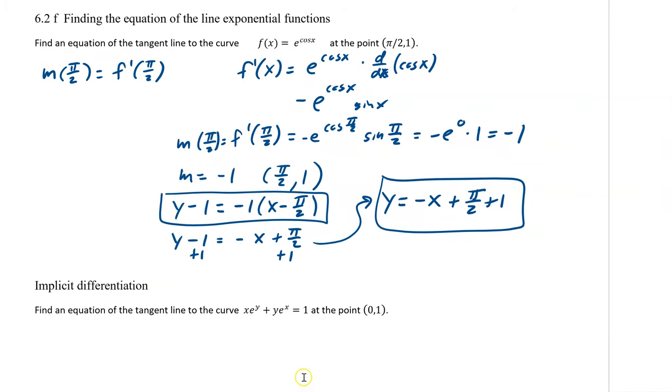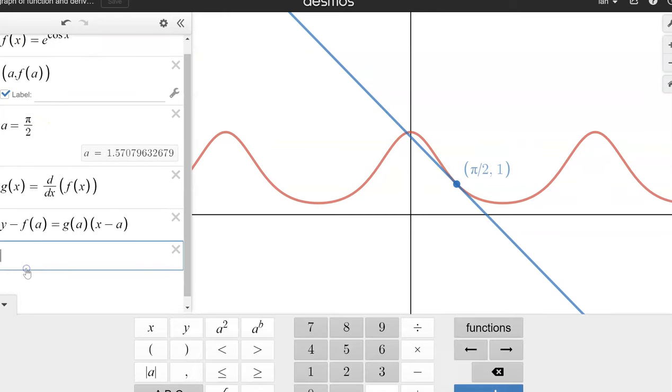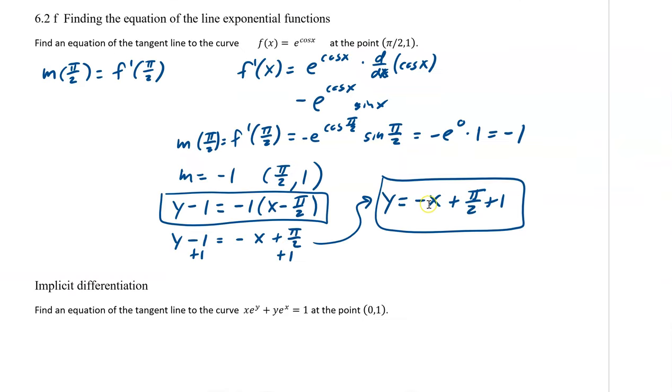The other way is to use Desmos. So I've already got them plugged into my function, so this is something you can look up on my website. This is finding the graph of a function, its derivative. So there's my function, there's my a value right there, and it will actually plot the tangent for you. So you just now have to match it. So y equals, negative x plus π/2 plus 1.